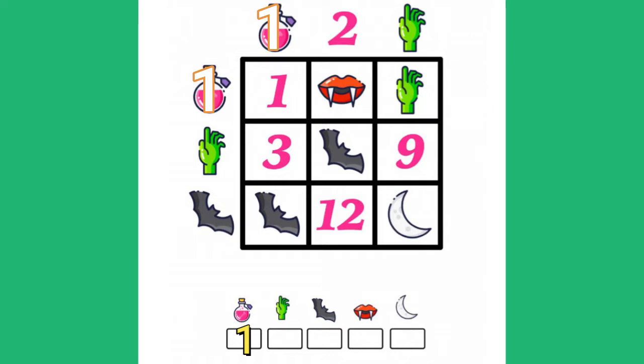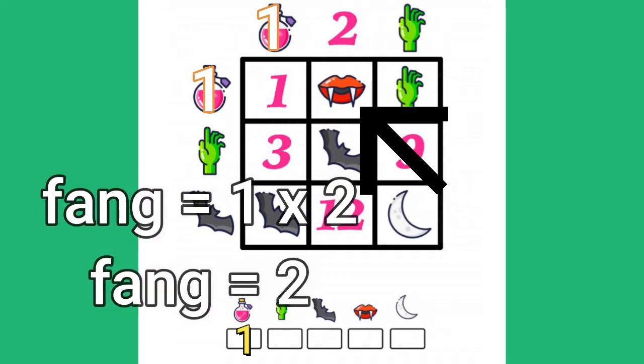Then, let's look at the fangs. I know the potion is 1. 1 times 2 equals 2. So the fangs must be 2.